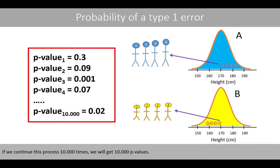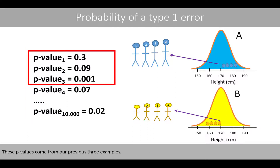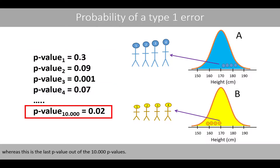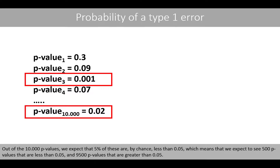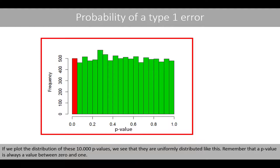If we continue this process, for example 10,000 times, we will get 10,000 p-values. These p-values come from our previous three examples, and this is the last p-value out of the 10,000. Out of the 10,000 p-values, we expect that 5% of these are, by chance, less than 0.05, which means that we expect to see 500 p-values that are less than 0.05 and 9,500 p-values that are greater than 0.05. If we plot the distribution of these 10,000 p-values, we see that they are uniformly distributed.